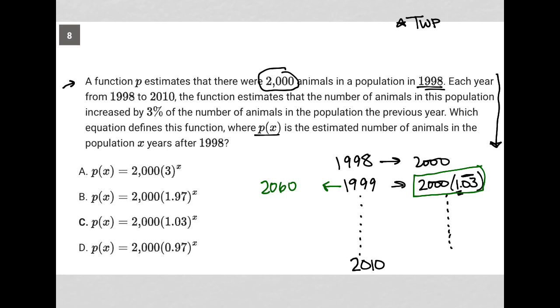And that tells me that when X equals 1, P of X should equal 2,060. I know that when X equals 0, P of X should equal 2,000. So when you're 0 years beyond 1998, the population is 2,000. When you're 1 year beyond 1998, the population is 2,060. Now, why is that important to me?